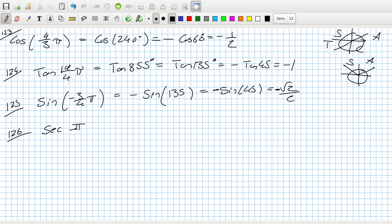126. Sec π/6. Sec is 1 over cos, and then π/6, that's cos 30. Cos 30 is √3/2, so that's 2 over √3, so that's 2√3/3.